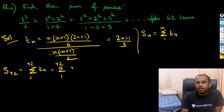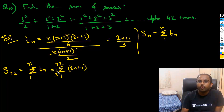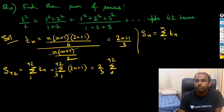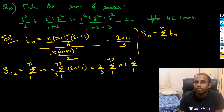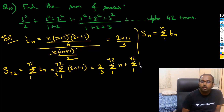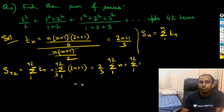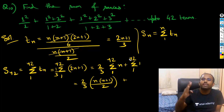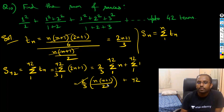I can break this a bit: writing (2n+1) and taking 1/3 outside. Then I can further factor it as (2/3) × summation from 1 to 42 of n, plus summation from 1 to 42 of 1. The summation of 1 added 42 times equals 42. This simplifies to: (2/3) × [n(n+1)/2] + 42. The 2 gets cancelled, giving n(n+1)/3 + 42.